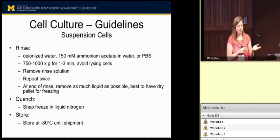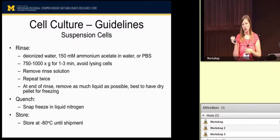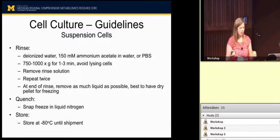For suspension cells, we recommend that you wash your cells. Water is just fine; if you can't use water, there are various buffers, though some can affect the mass spec, so ask before using something not listed. Spin them very slowly because you do not want to lyse your cells. Rinse them a couple of times, suck off the media and wash buffer. We want a dry pellet if possible, then quickly freeze it in liquid nitrogen as soon as you can after that final wash. Store at minus 80 degrees until you ship or are ready to analyze.